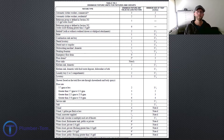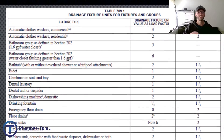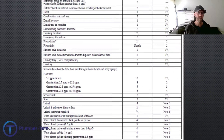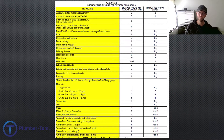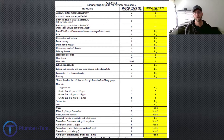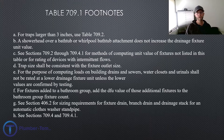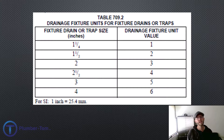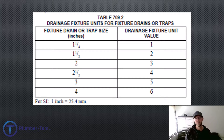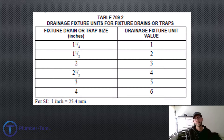There is a table 709.1 in this section that details what we need to know to size pipe. On this table, the left column lists fixtures, the middle column gives the drainage fixture unit values for those fixtures, and the third column gives the minimum trap size for those fixtures. Be sure to check the footnotes below. Another table to be familiar with is 709.2 — it gives fixture drain or trap sizes from one and a quarter up to four inch with an associated drainage fixture unit for each. This is a standardized rule of thumb, particularly useful for fixtures not on the main table.